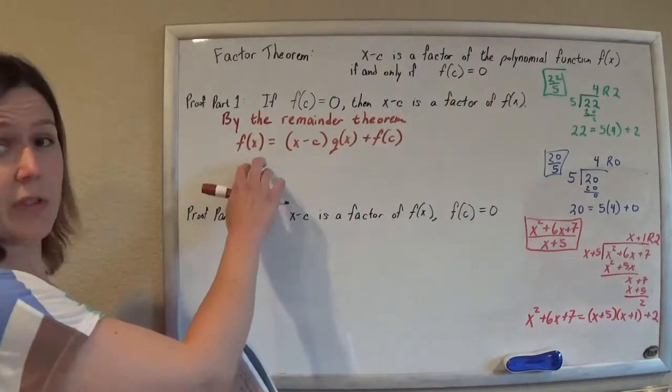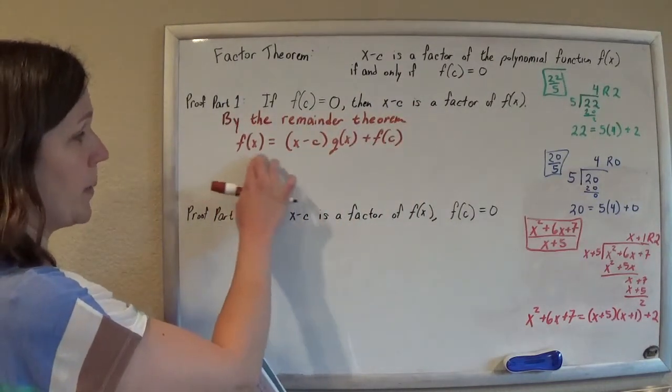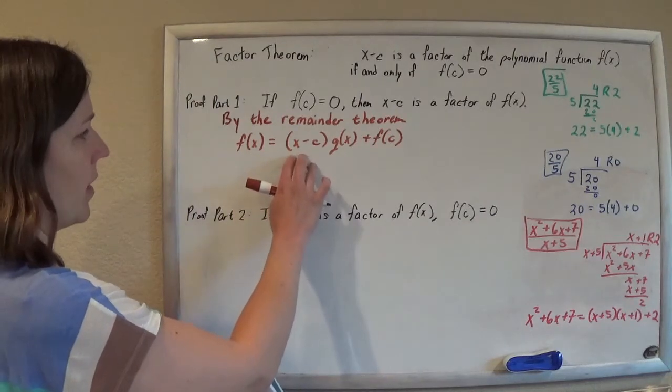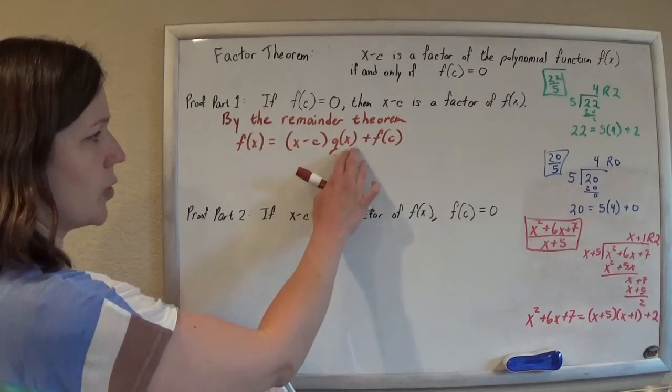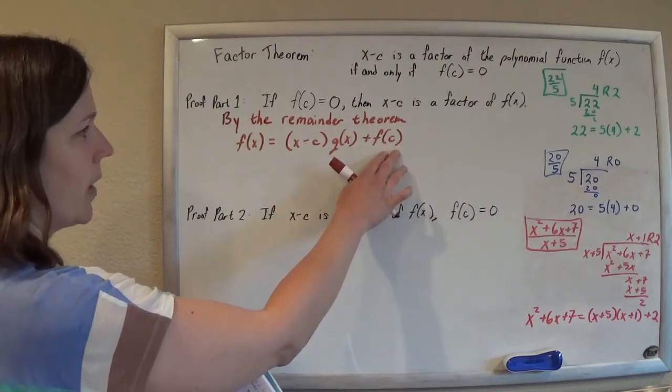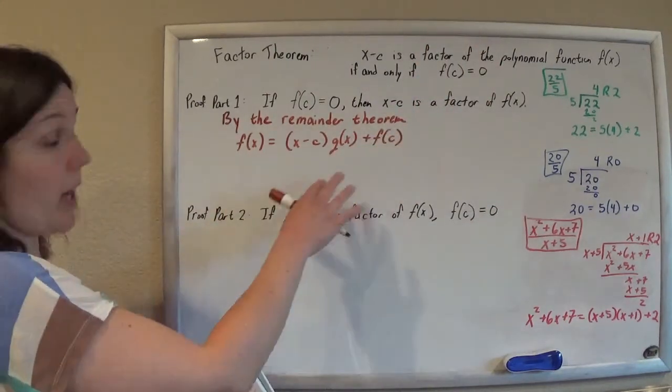So, we start off by using our remainder theorem that we can write any polynomial as x minus c times q of x plus f of c. And I'll explain why that makes sense in a second, but just for now.